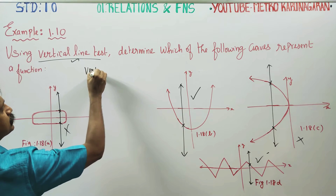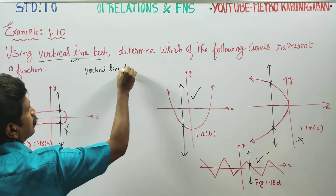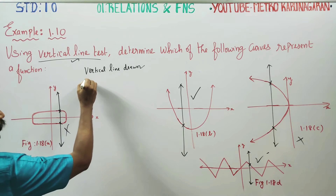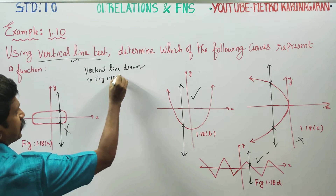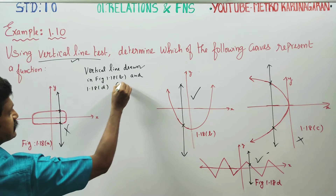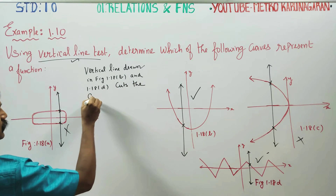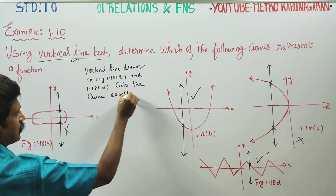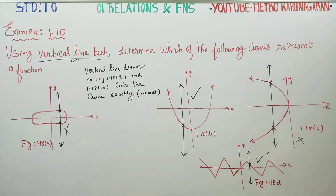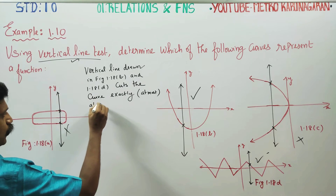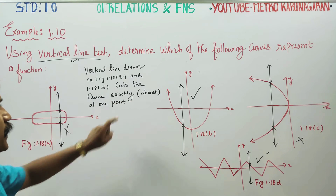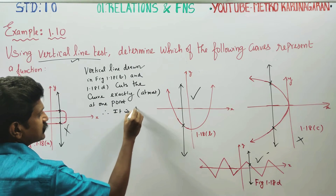A vertical line drawn in figures 1.18b and 1.18d cuts the curve at exactly one point at all positions. Therefore, it is a function.